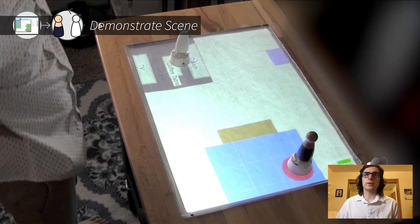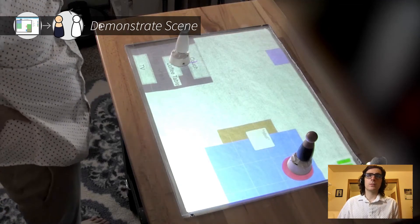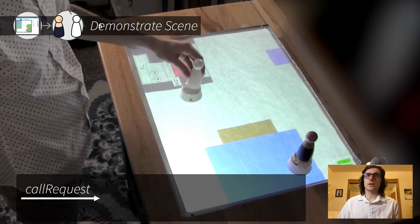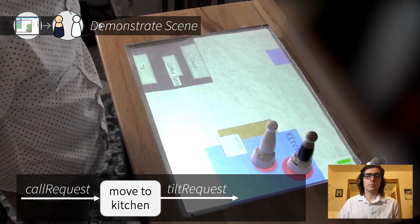Demonstrators then manipulate the figurines to act out scenes of an interaction, or in other words, positive input-output examples that demonstrate how a robot should behave. Figaro records the scene as an execution trace.